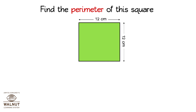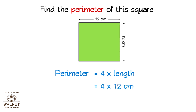Find the perimeter of this square. Let us use the formula. Perimeter of a square is equal to 4 into length. We know what the length is, so let us put that value in. Then we multiply: 4 into 12 cm. We get the perimeter: 48 cm.